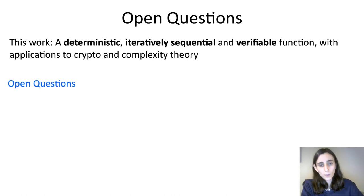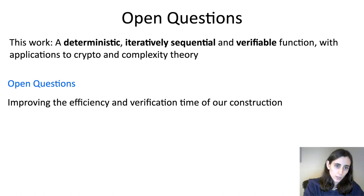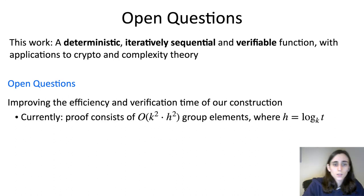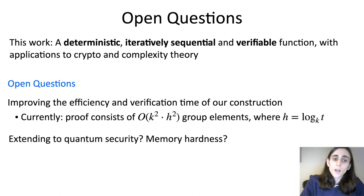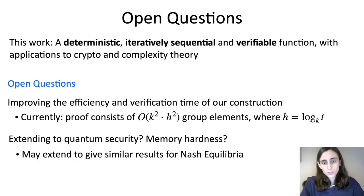I'll just conclude with some open questions. I think one main open question in this work is really improving the efficiency of our construction. What we did by adding nodes to this tree from Pietrzak's proof, it increased our overall state size and verification time from Pietrzak's original protocol. So it would be really great to improve this to make our construction more practical. Another open question would be possibly extending this to quantum security or to memory hardness, especially because it could be the case that if we do that, it might give evidence for similar results for Nash Equilibria. So with that, I will conclude. Thank you.